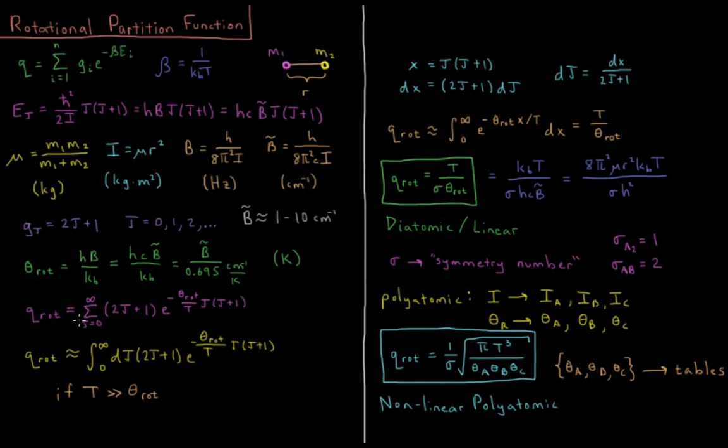Just as with our translational partition function, sums are hard, but integrals are easier. So we want to replace that sum with an integral. Our rotational partition function is approximately the integral from 0 to infinity with respect to quantum number j of 2j plus 1 times e to the minus theta rote over t j times j plus 1. This is valid if our temperature is much greater than the rotational temperature. You typically expect values on the order of 5, 10, 20 Kelvin for theta rote. If we're doing this at around 300 Kelvin, we're usually more than okay. Much greater than usually means bigger by about a factor of 10.